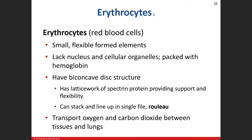When you centrifuge blood, there are three layers. The middle layer — the buffy coat — is the smallest and that's where your white blood cells are. The bottom layer is the red blood cells. The top layer is plasma. The majority of plasma — 92% — is water, and about 7% is proteins.